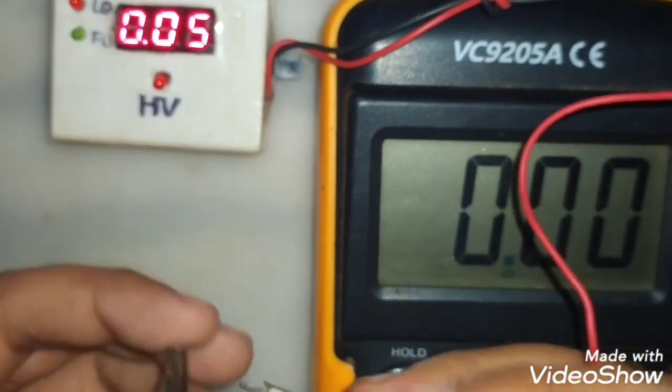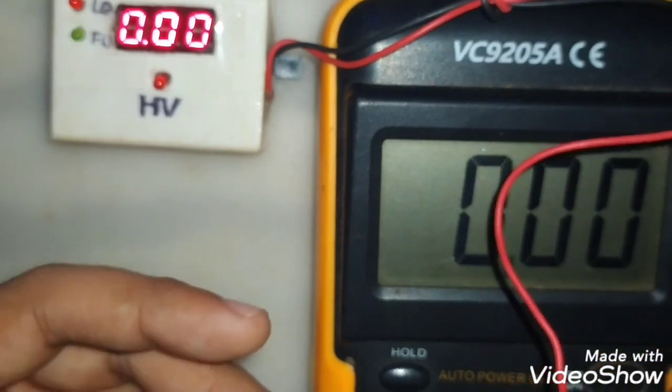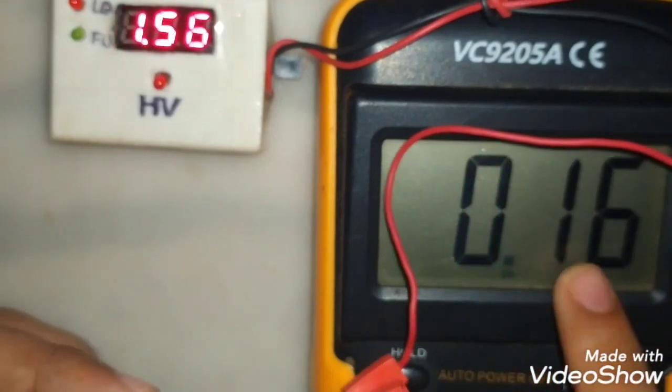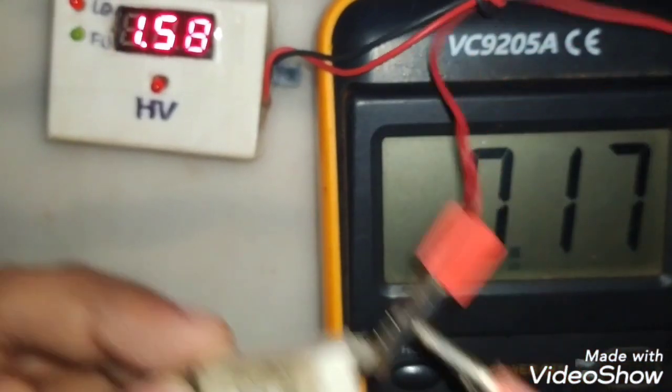Now let's use this 10 ohm resistor, you can see the value is very close to the reading of multimeter. It's 160 milliamp.